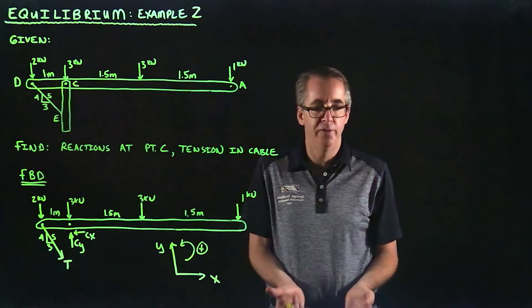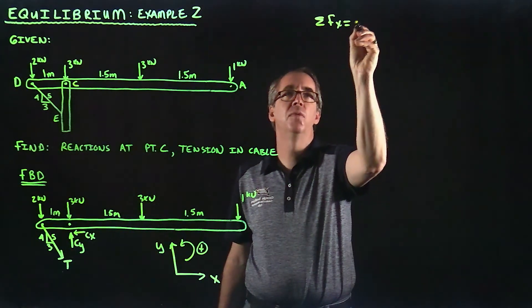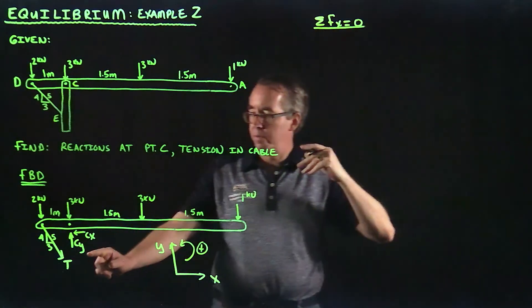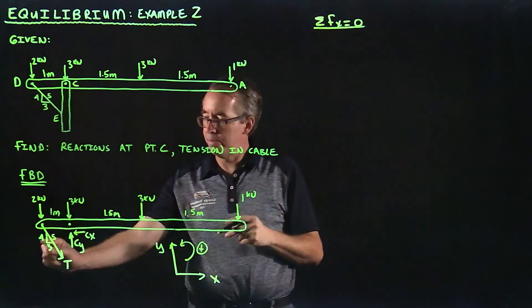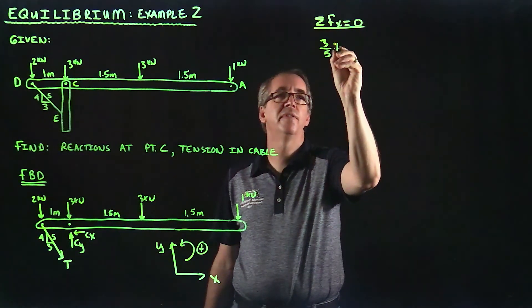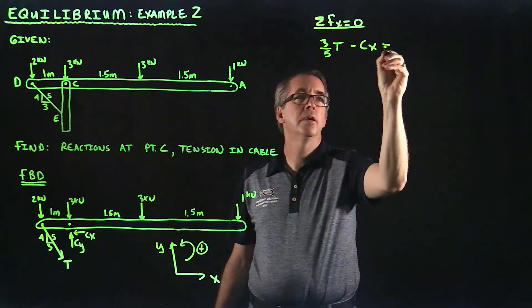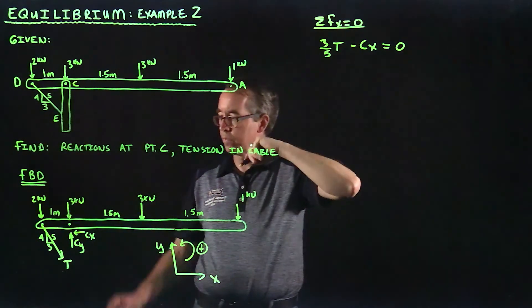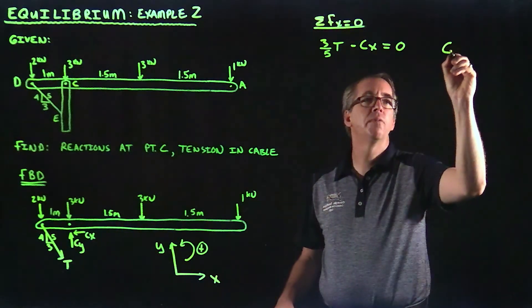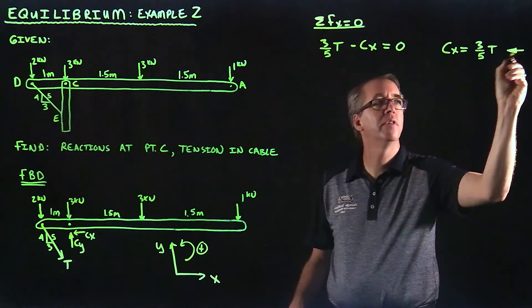With equilibrium, we only have three equations available to us in our toolbox. Let's start off in the horizontal direction. Sum of forces in the X has to be equal to zero. I've got T. Its horizontal component is going to be 3 fifths, and it's going to the right. So I've got 3 fifths of T, that's going to the right, minus CX is equal to zero. From there, we see that CX is equal to 3 fifths T. This will be our first equation.